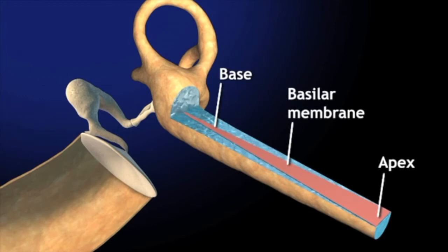Second, the membrane's stiffness decreases from base to apex, the base being about 100 times stiffer.